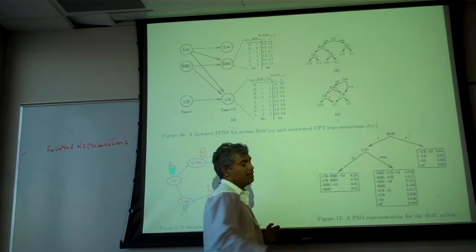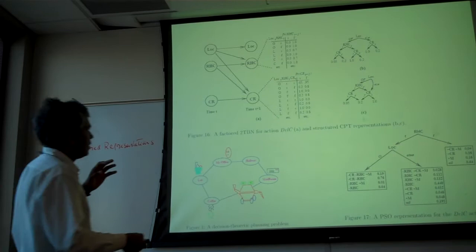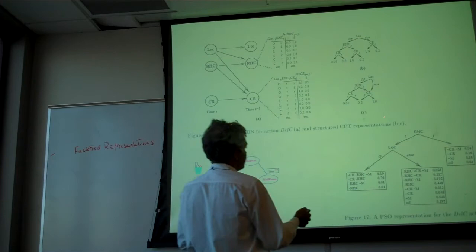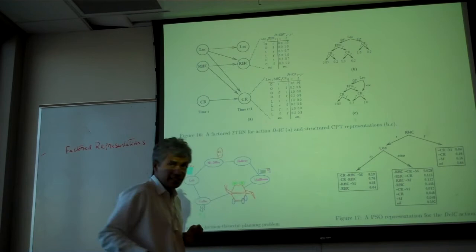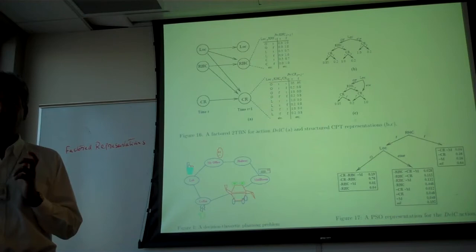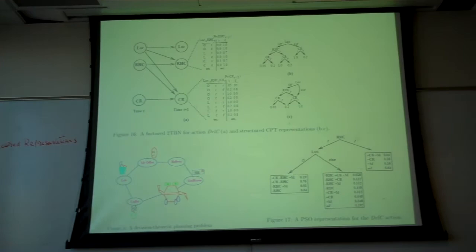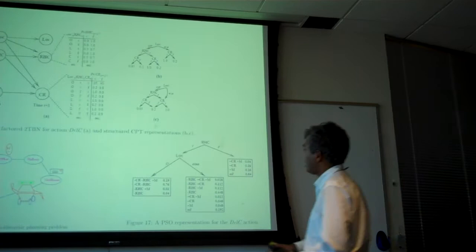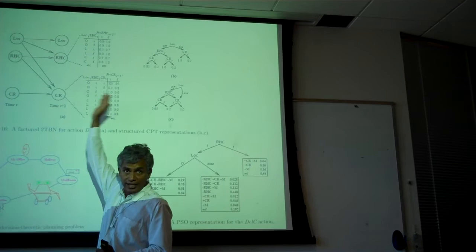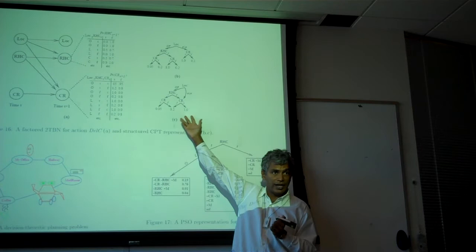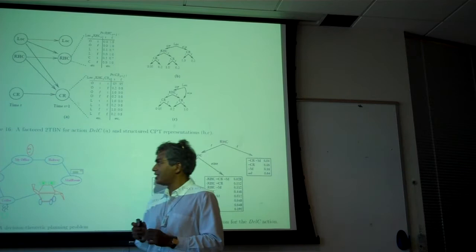ADD representation is useful for CPTs, reward functions, and value functions. When writing a 2TBN, if the CPTs don't have much structure, you use ADDs to find as much structure as possible. This is a general representation for actions. You write a 2TBN, and represent its CPTs in ADD form when possible.